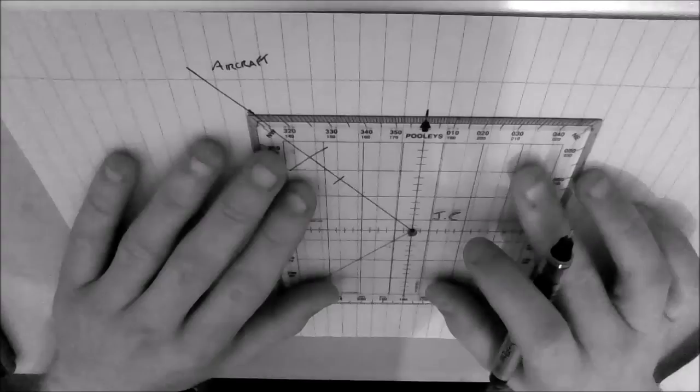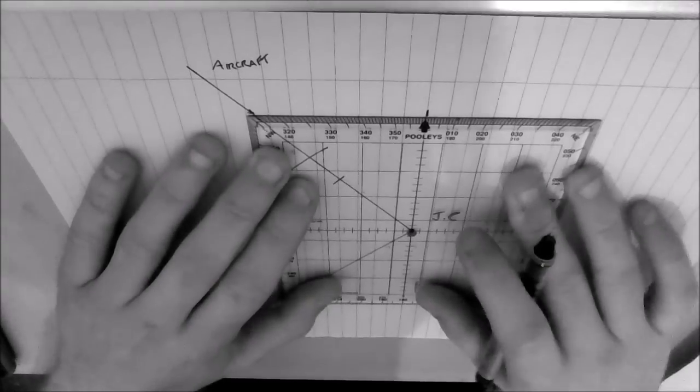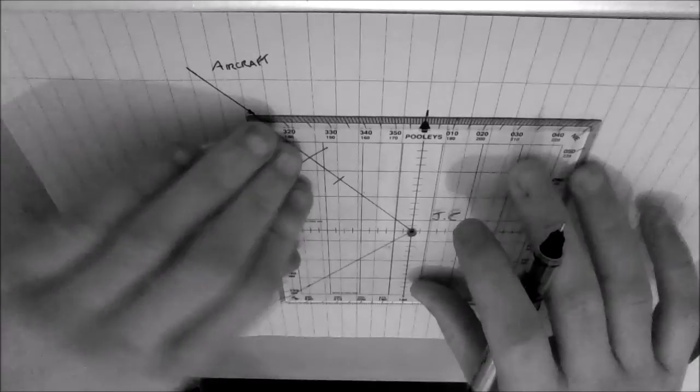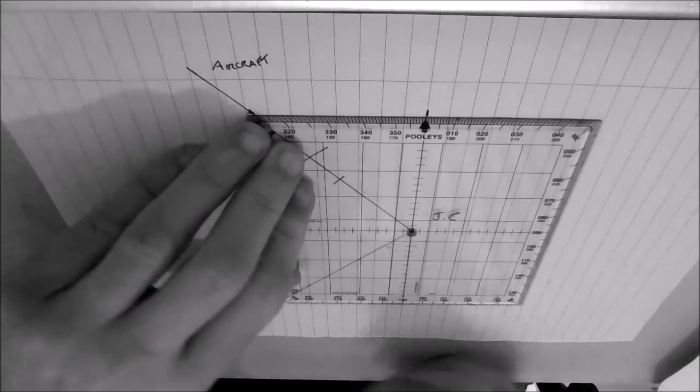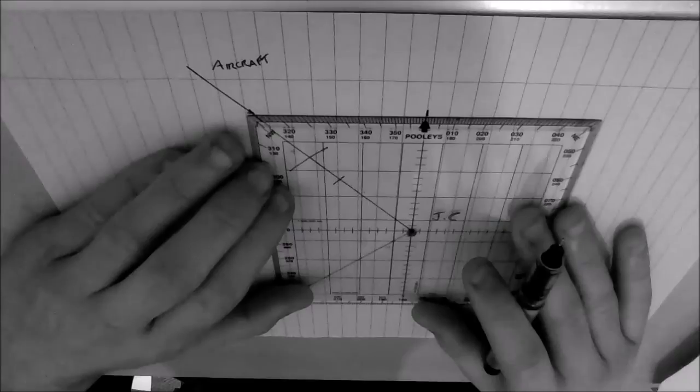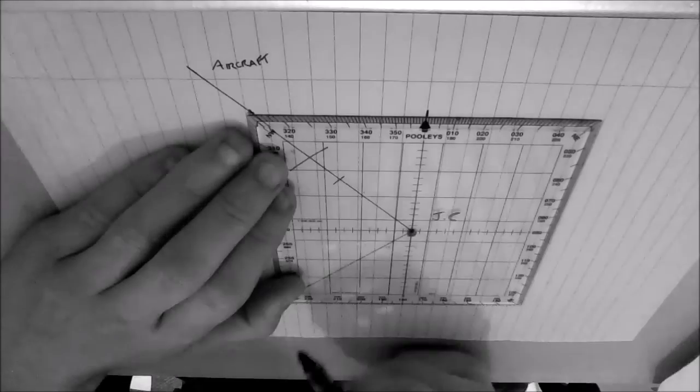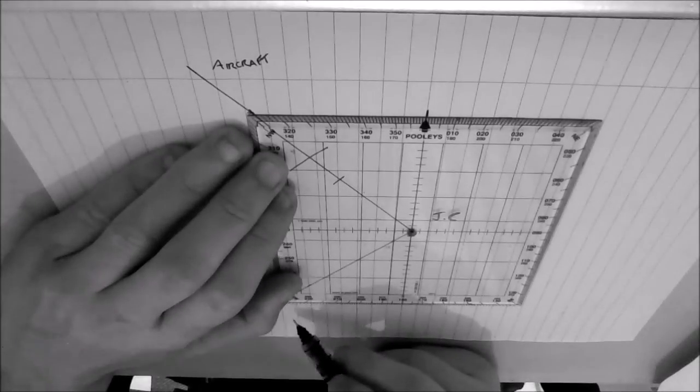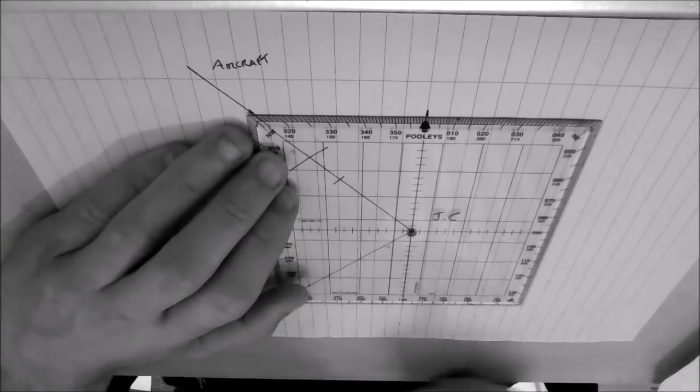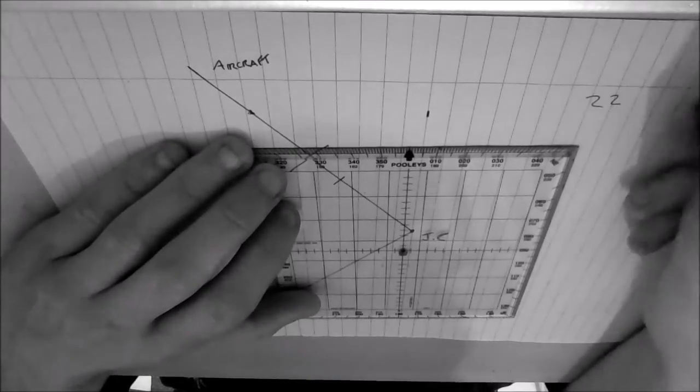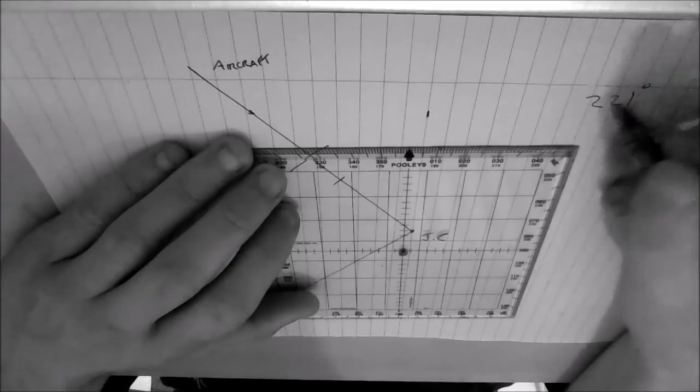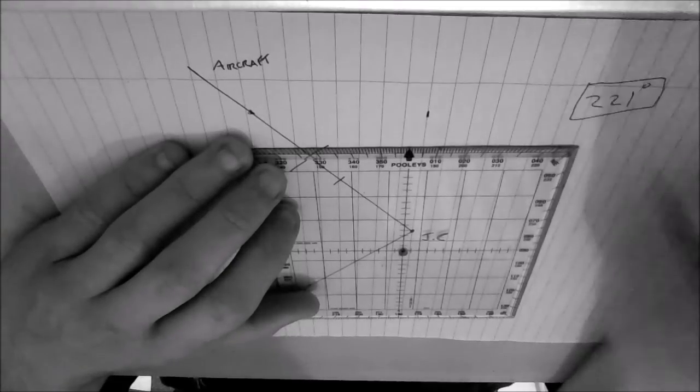All we want to do now is place your protractor back on the centre dot, and again align it with north, and if you follow your square protractor all the way around to the bottom there, you should read off the answer of 221, and that is it. Simple as that.